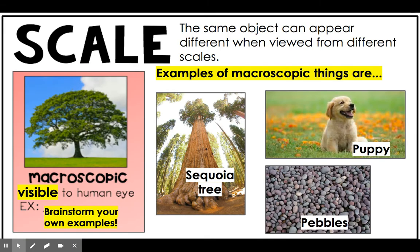Next up is macroscopic. Macroscopic is anything that is visible to the human eye. Macroscopic things can be very large or very small, as long as you can see them without help from a tool or a piece of technology. For example, a sequoia tree is a huge tree, and a pebble is teeny tiny, but they are both macroscopic. A puppy is also macroscopic, and I included it because it is very cute. These could be examples that you include in your graphic organizer, or you could brainstorm your own.